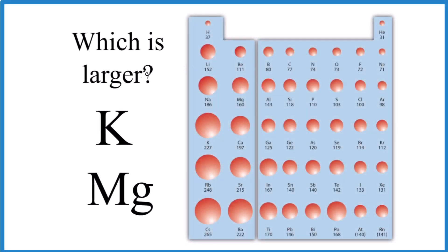If you're asked to figure out which one of these atoms, K or Mg, that's potassium or magnesium, has a larger atomic radius, here's how you do it.